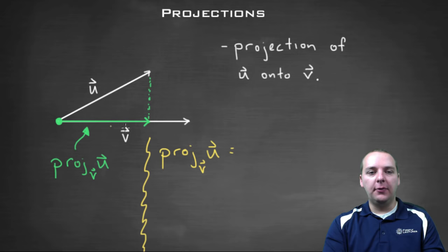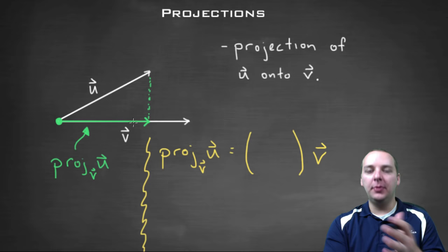The first thing that I notice about the green projection vector is that it's in the same direction as v since it was projected onto v. Which means it's simply going to be some scalar multiple of vector v. I didn't need anybody's help to determine that much. It's going to be either shorter or longer than v, depending on how long u is.